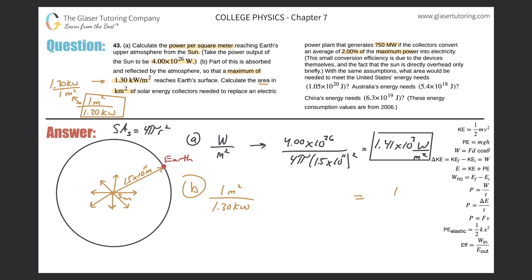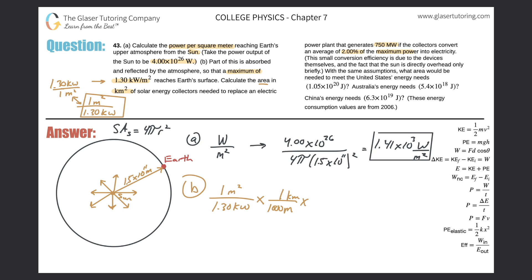I need the area in the numerator, so I'm going to use the flipped version: one meter squared over 1.30 kilowatts. Now let's convert from square meters to square kilometers. I know there are 1,000 meters in 1 kilometer, but since this is squared, I need to square that conversion factor — 1,000 meters over 1 kilometer, squared. Both meters cancel, and kilometer times kilometer gives kilometer squared.